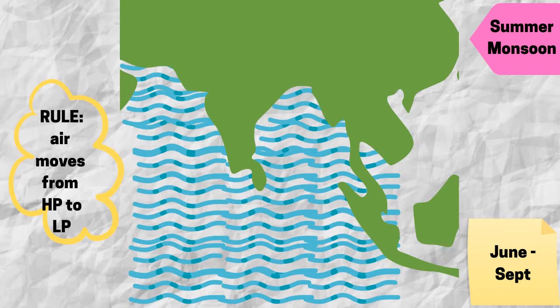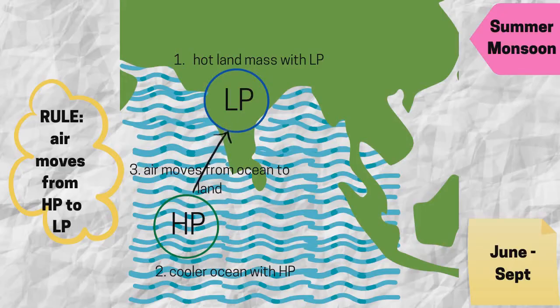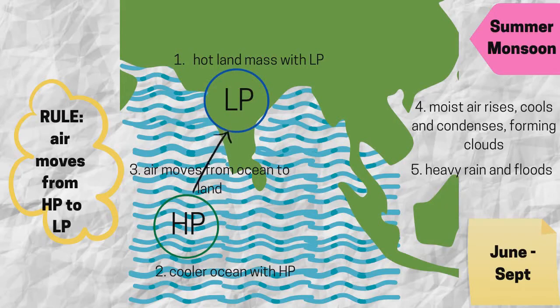Now let's compare this to the summer monsoon. In summer, the land gets a lot warmer. Warm air is associated with a low pressure cell, so there is a low pressure over the land. In comparison, the ocean is much cooler, associated with a high pressure cell. Air moves from high pressure to low pressure, so during a summer monsoon, air moves from the ocean to the land. This wind is coming from the southwest, which is why the summer monsoon is also known as the southwest monsoon. When air comes from the ocean, it contains a lot of moisture — this air rises, cools, and condenses, forming clouds and rain. Summer monsoons are associated with heavy rainfall and floods, which is why it is also known as the wet monsoon.